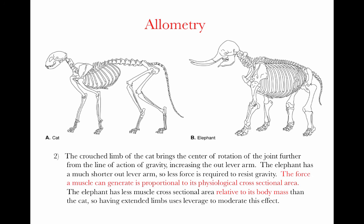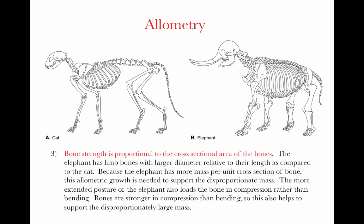Having an extended limb posture uses leverage to its advantage to moderate this effect. Bone strength is also proportional to the cross-sectional area of bones. The elephant has limb bones with a larger diameter relative to their length compared to the cat. Because the elephant has more mass per unit cross-section of bone, this allometric growth is needed to support that disproportionate mass. The more extended posture also stacks these bones more linearly so the main force experienced is compression, which is transmitted directly through the bone — bones are strongest in compression, much stronger than in bending.